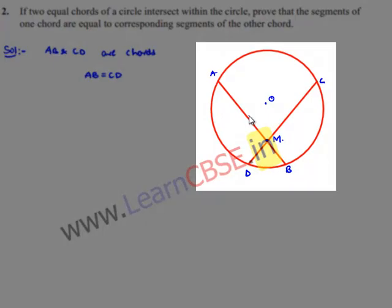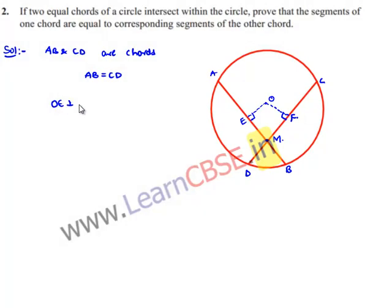Now let us draw a perpendicular OE to the chord AB and a perpendicular OF to the chord CD. That is, OE is perpendicular to AB and OF is perpendicular to CD. Let us also join OM.